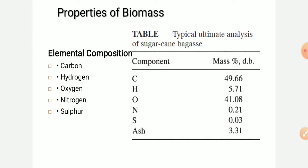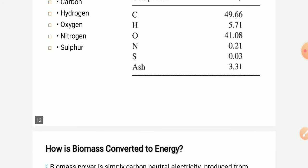The elemental composition of biomass includes carbon, hydrogen, oxygen, nitrogen, and sulfur. The mass percentages on a dry basis are approximately: carbon 49.66%, hydrogen 5.71%, and oxygen 41.08%.